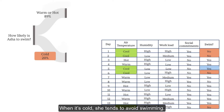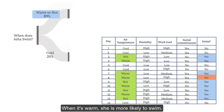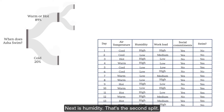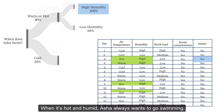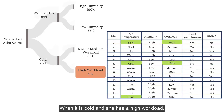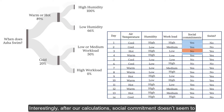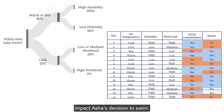When it's cold, she tends to avoid swimming. When it's warm, she is more likely to swim. Next is humidity — that's the second split. When it's hot and humid, Asha always wants to go swimming. Finally, workload is the next split. When it is cold and she has a high workload, she is least likely to go swimming. Interestingly, after our calculations, social commitment doesn't seem to impact Asha's decision to swim.